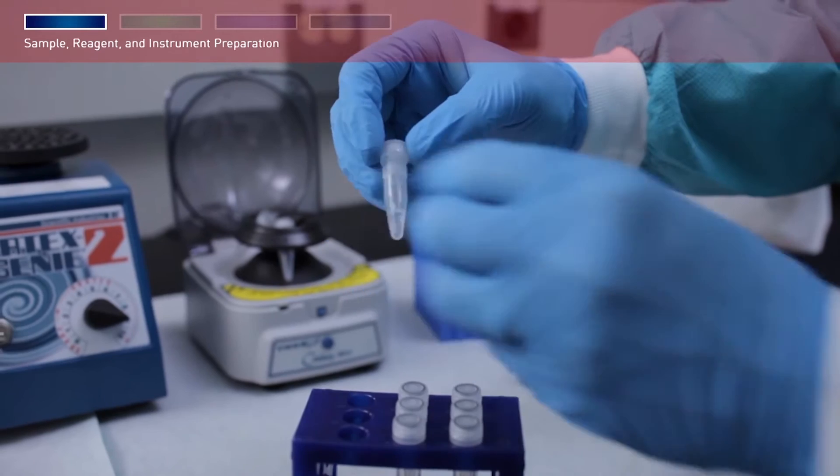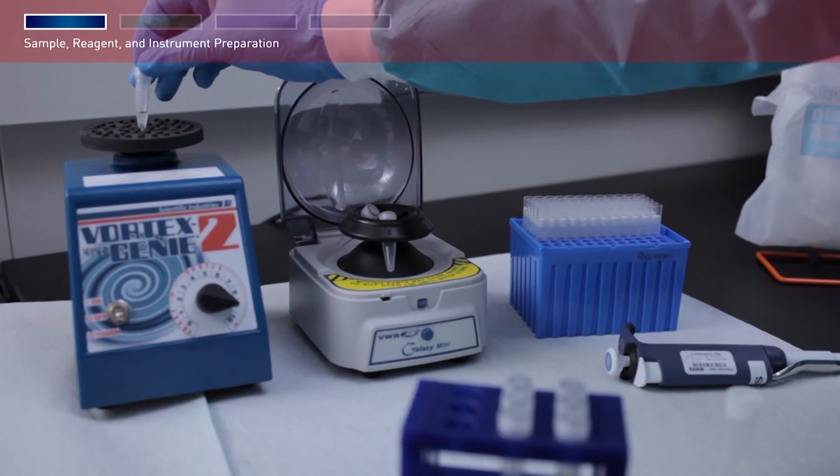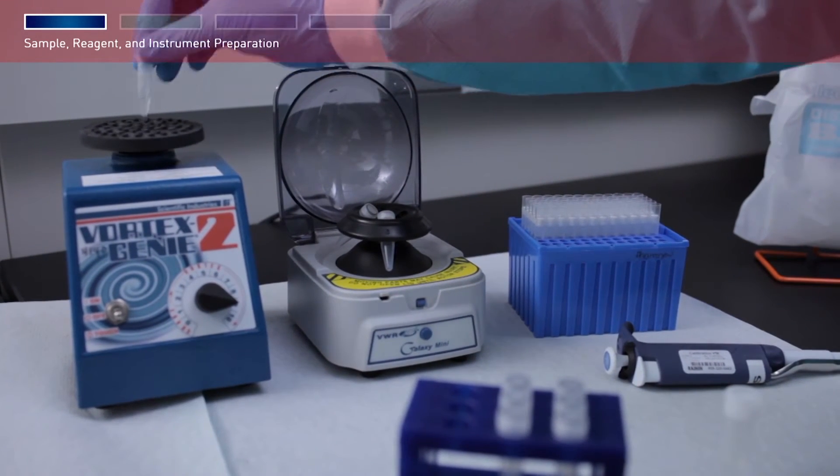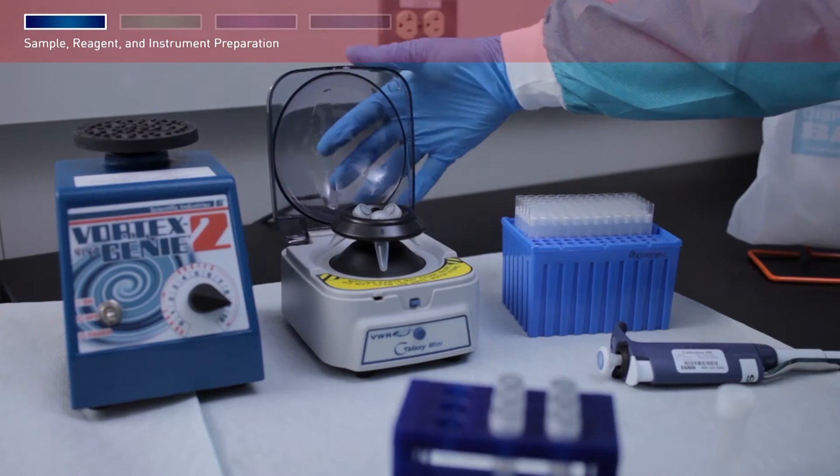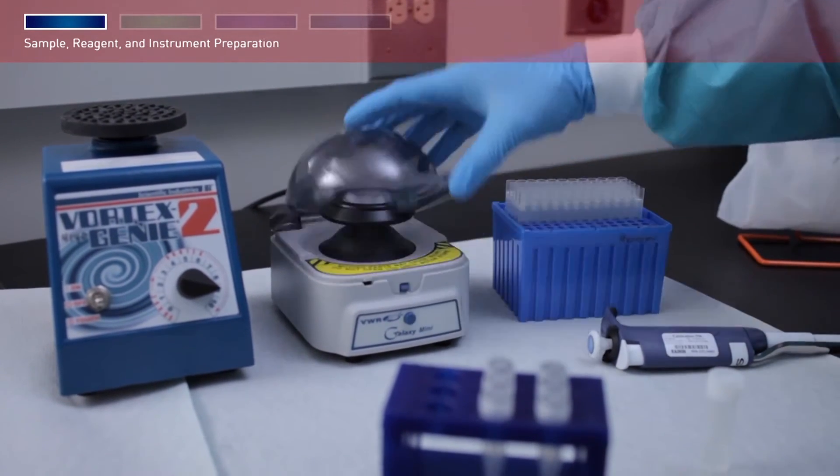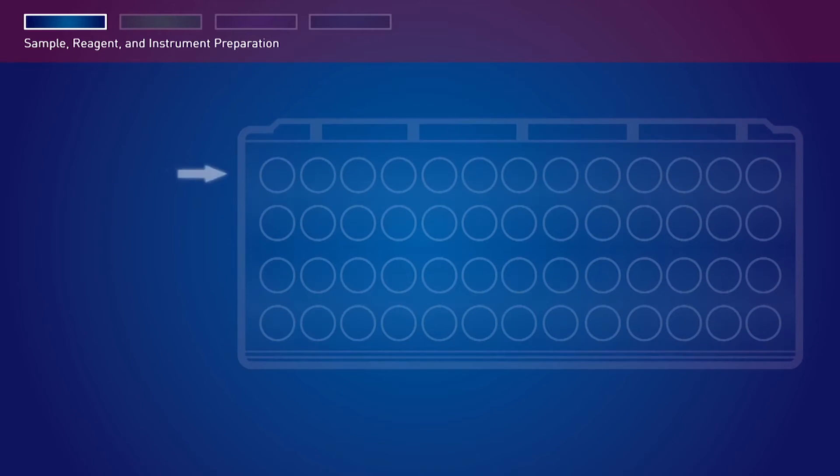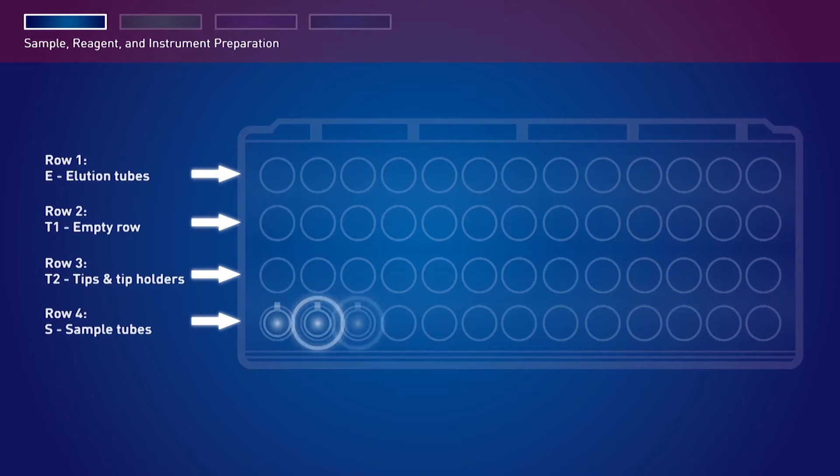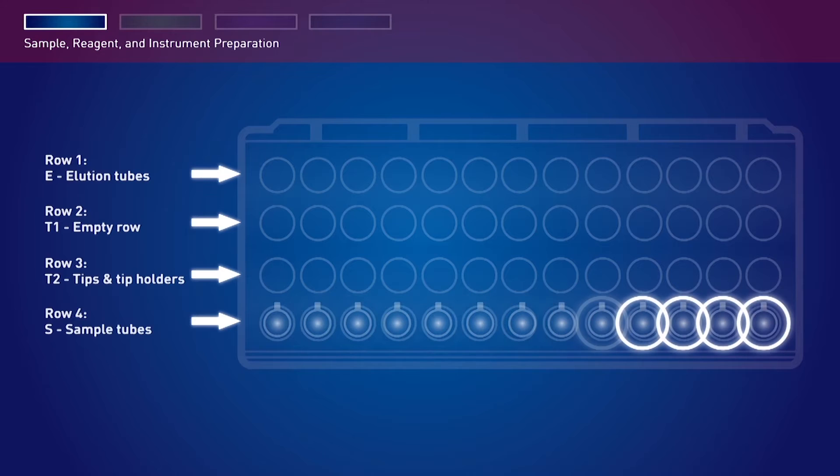Cap the tubes and vortex, then briefly spin to collect the samples to the bottom of the sample tube. Remove the screw caps and load the sample tubes into row S, fourth row of the tip and tube rack.